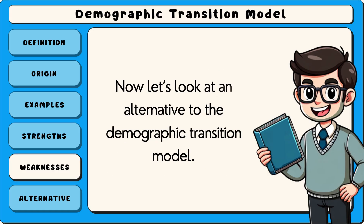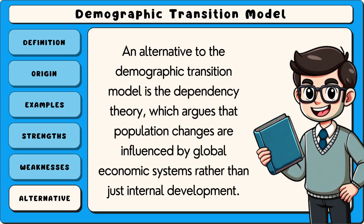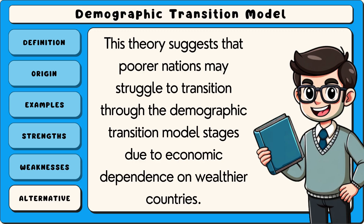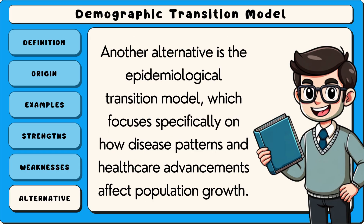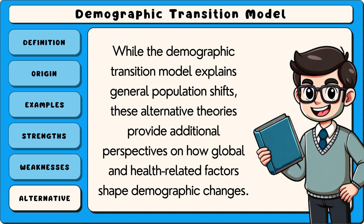An alternative to the demographic transition model is the dependency theory, which argues that population changes are influenced by global economic systems rather than just internal development. This theory suggests that poorer nations may struggle to transition through the demographic transition model stages due to economic dependence on wealthier countries. Another alternative is the epidemiological transition model, which focuses specifically on how disease patterns and healthcare advancements affect population growth. These alternative theories provide additional perspectives on how global and health-related factors shape demographic changes.